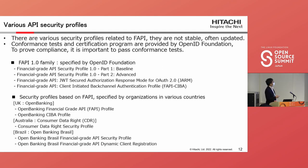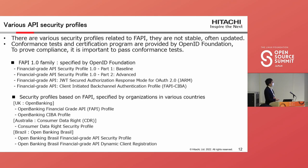In the FAPI 1.0 family, specified by the OpenID Foundation, there are four types of specifications: baseline, advanced, JAR, and FAPI-CIBA. Also, there are security profiles based on FAPI specified by organizations in various countries. In the UK, open banking, and in Australia, CDR, and in Brazil, open banking — each defines such profiles. Conformance tests are prepared for these profiles from the OpenID Foundation.